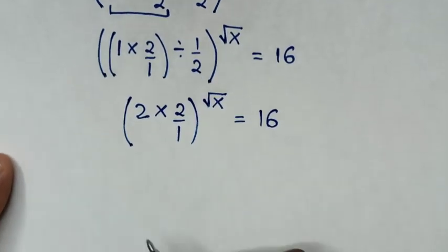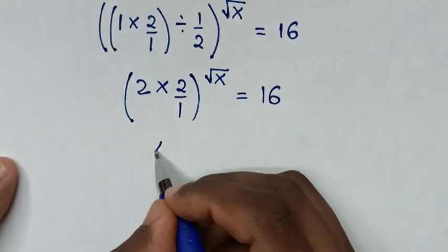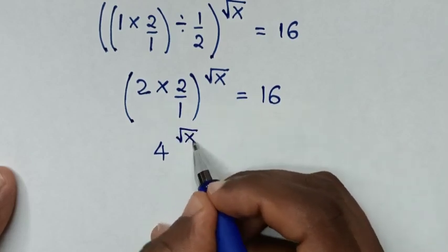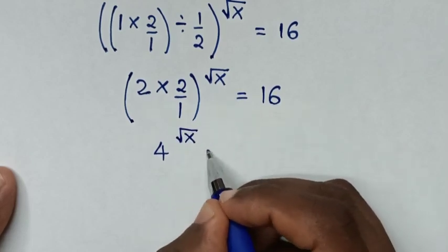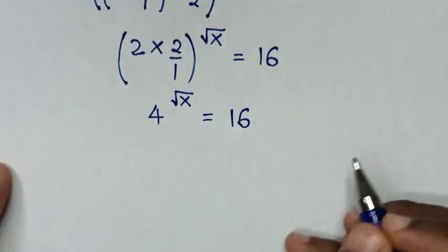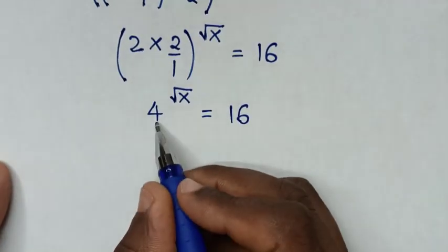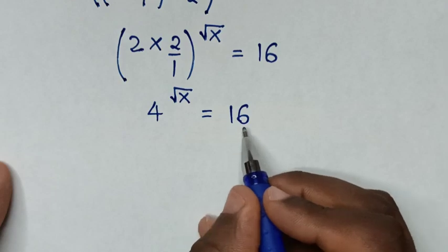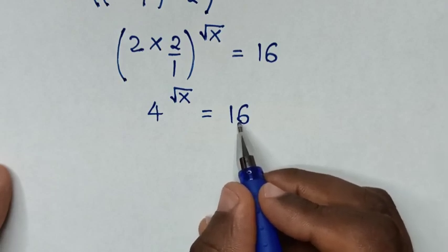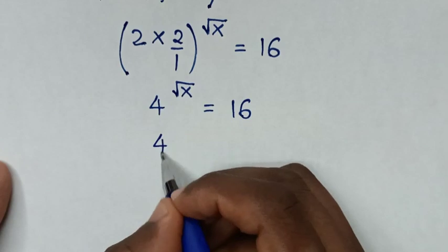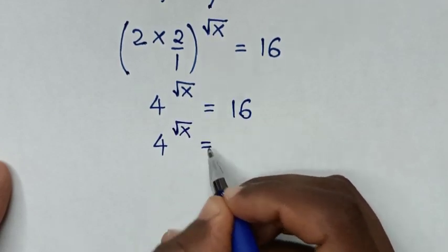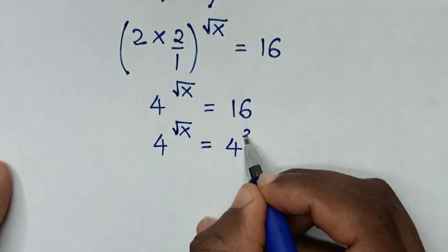In the next step, 2 times 2 times 2 is 4. So it will be 4 to the power of square root of x is equal to 16. Because we have a base of 4, we will rewrite 16 with base 4. So 16 is the same as 4 squared. Then it will be 4 to the power of square root of x is equal to 4 squared.